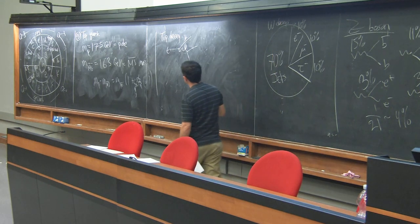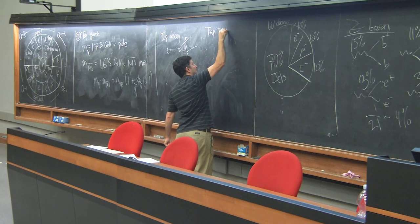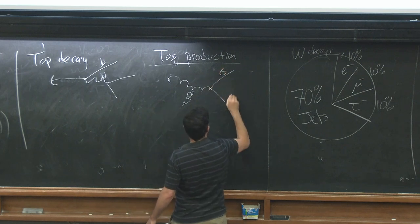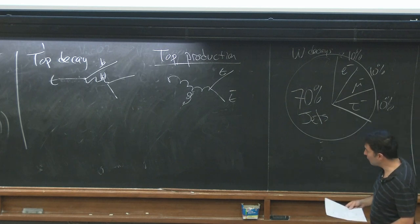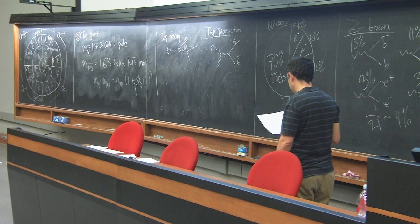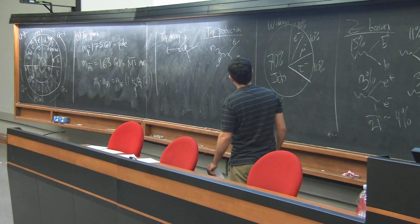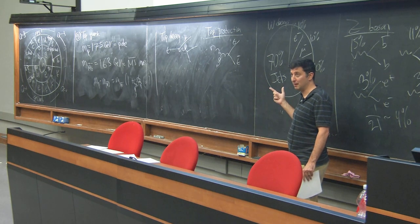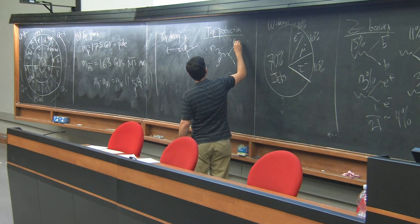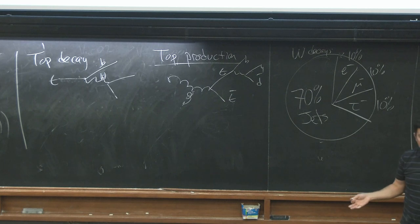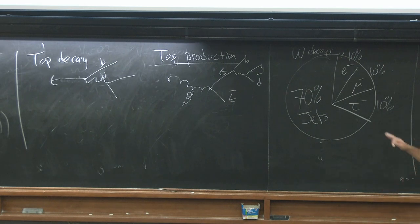Typically tops are produced in pairs. The dominant production mechanism at the LHC is gluon-gluon fusion to top-antitop pairs. The cross-section is in the picobarn range for TT-bar production, especially at high energy where the top mass becomes negligible. You produce tops in pairs and then want to identify them. Most of the time they decay to jets, and if both tops decay to jets it's very hard to see them because there's a lot of background jets — competing with gluon to six-gluon processes that are a million times larger.